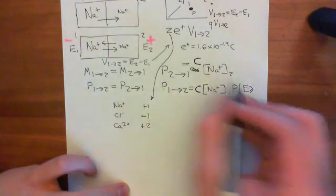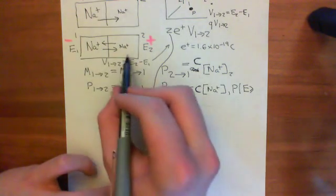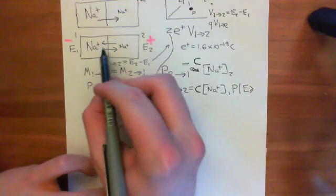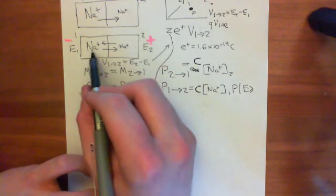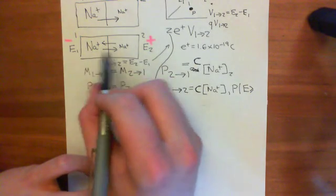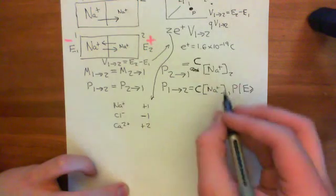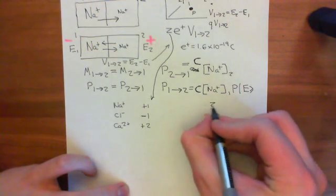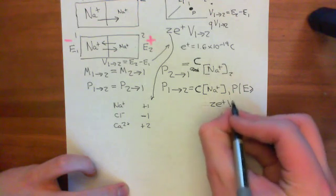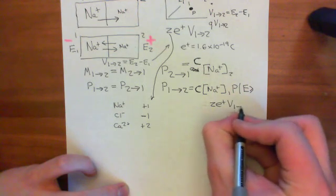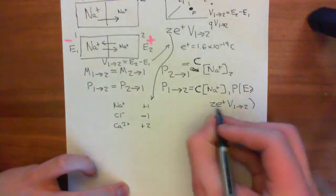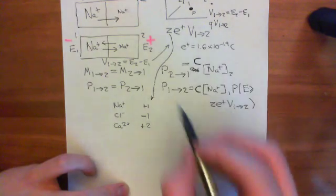You have to take account of the fact that to move from compartment 1 to compartment 2, you can't just bump into this membrane — you have to actually have the necessary energy. So your energy needs to be greater than or equal to Z times the charge on the proton times the voltage difference from compartment 1 to compartment 2, this constant that we've worked out up here.